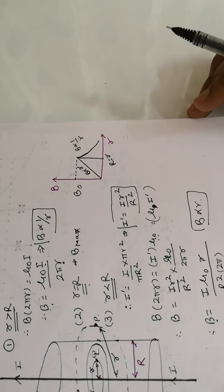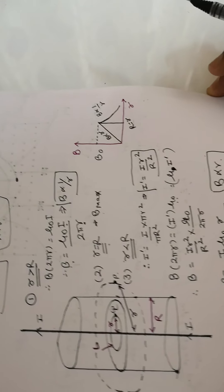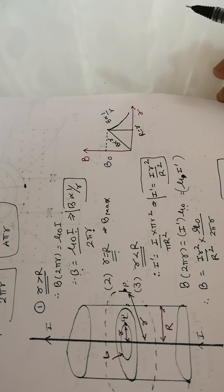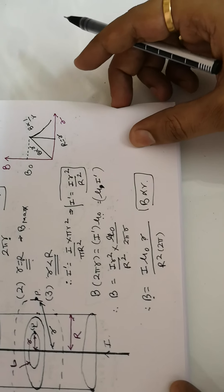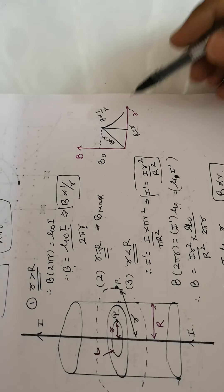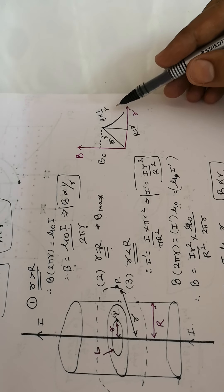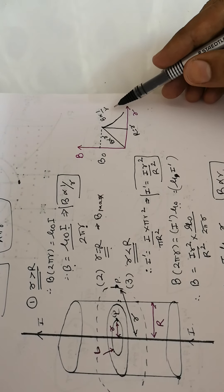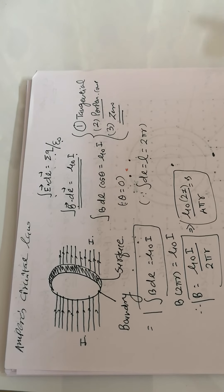To conclude: whenever there is a current-carrying conductor, the magnetic field keeps increasing directly as you move outward within the conductor. As you go beyond the conductor, the magnetic field gradually decreases. When there is no current enclosed, the magnetic field will be zero. This completes the primary introduction to Ampere's circuit law.